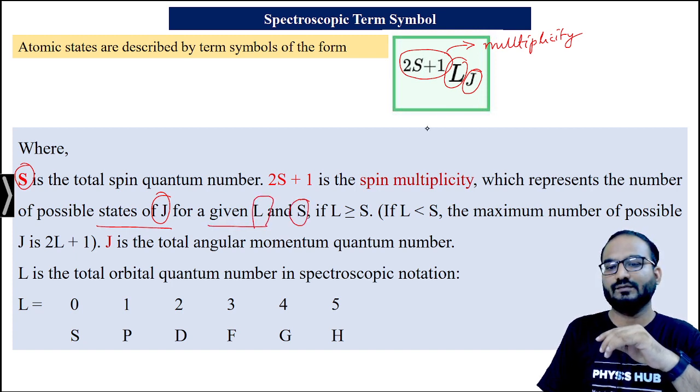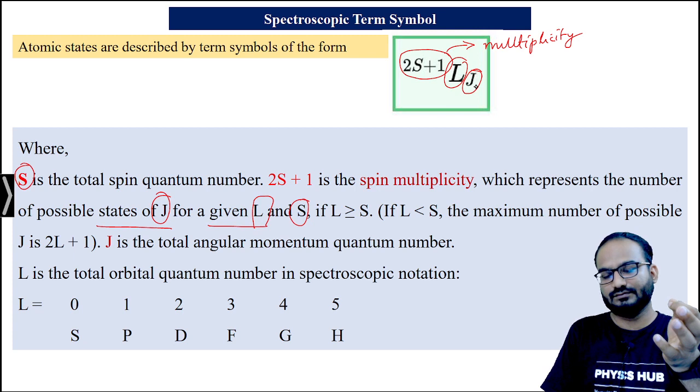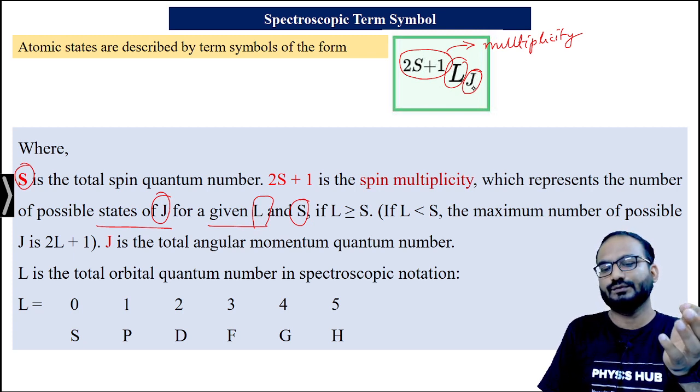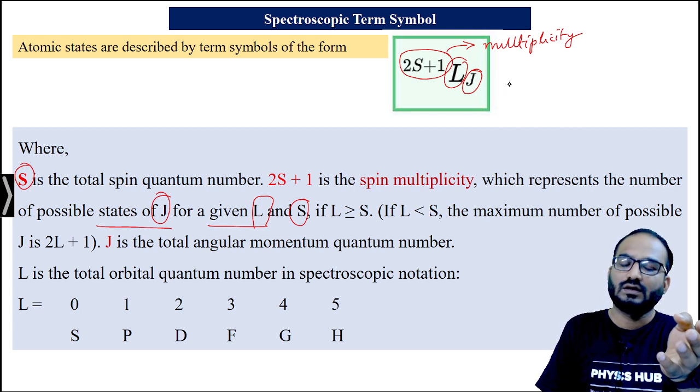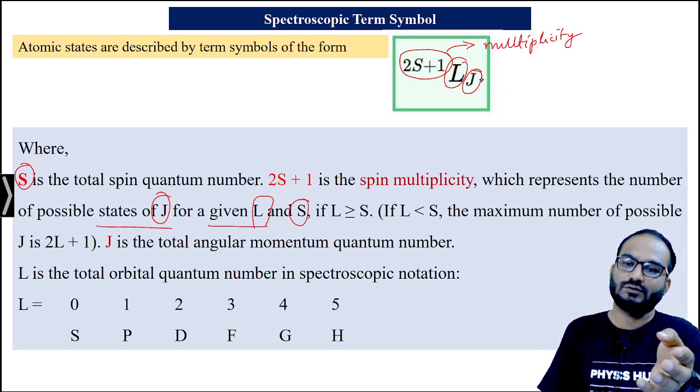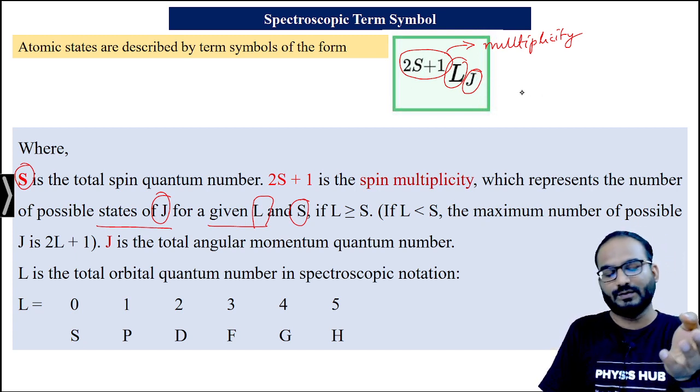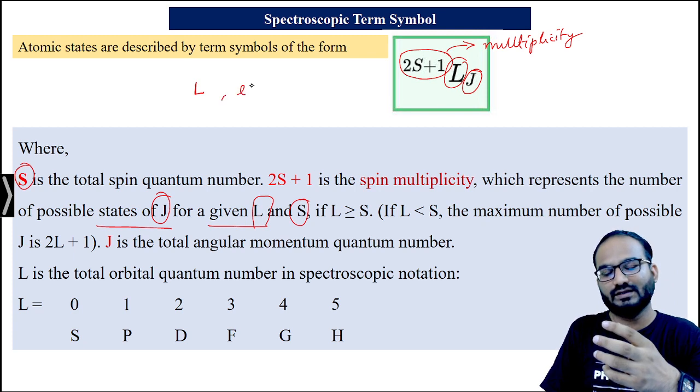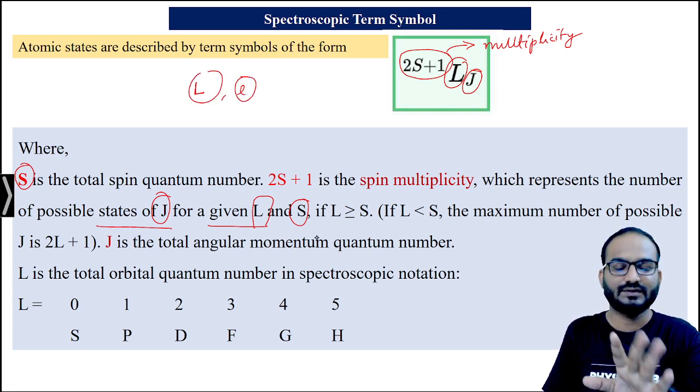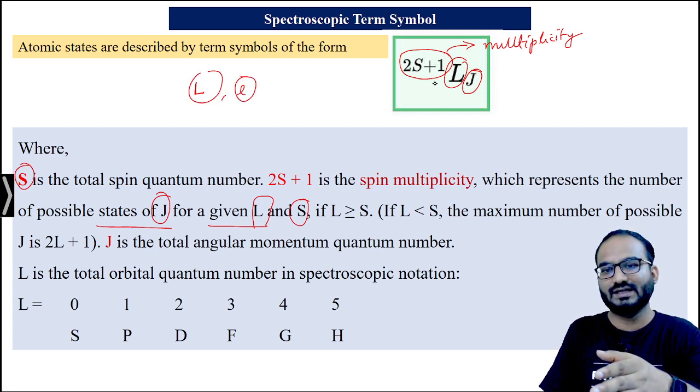L is the orbital quantum number, J is the total quantum number, and LJ represents orbital angular momentum and total angular momentum. Let's note the difference: if you're writing capital L, it represents angular momentum. If you're writing small l, that is the quantum number. The same goes for J and S.